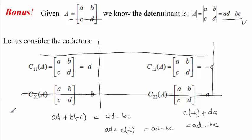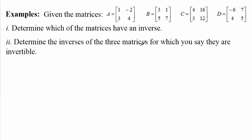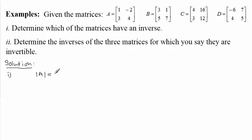Now let's do some examples and practice. Given matrices A, B, C, and D, determine which of the matrices have an inverse. For part one, let's check matrix A. We calculate the determinant of A using our new approach: take the entry 1, multiply by cofactor (-1)^(1+1) times the minor 4, and add the entry -2 multiplied by cofactor (-1)^(1+2) times the minor 3.